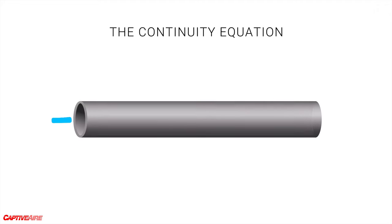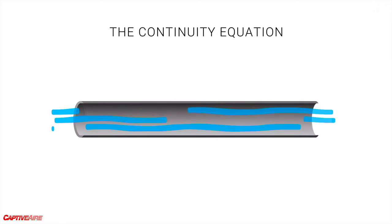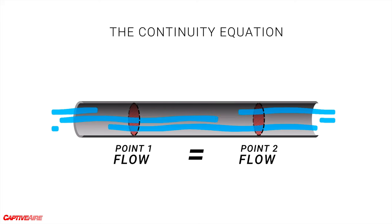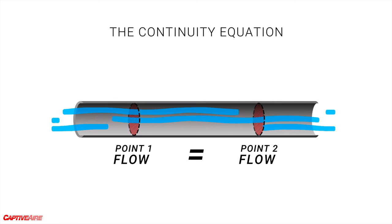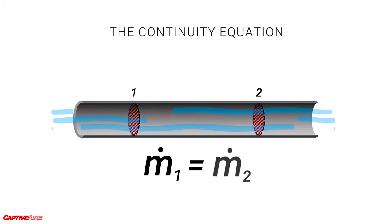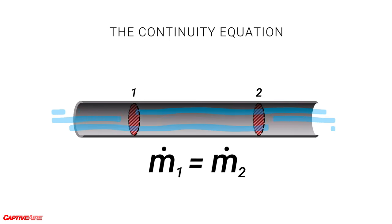The most basic concept to start with is the continuity equation. Let's say we have a length of pipe with a constant diameter and some water running through it. If we pick two arbitrary points along the pipe, we can say that the amount of water flowing past one point has to equal the amount flowing through the other. The pipe is the same diameter, so it'll flow through both points in the same amount and at about the same speed.